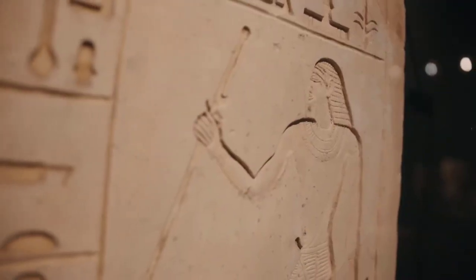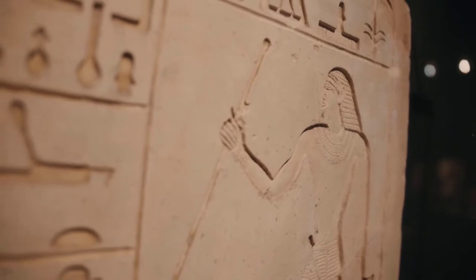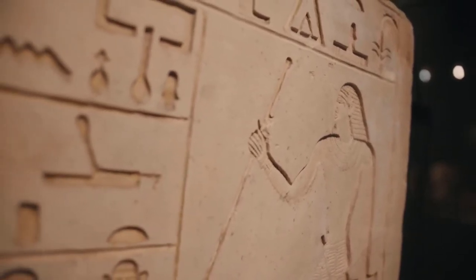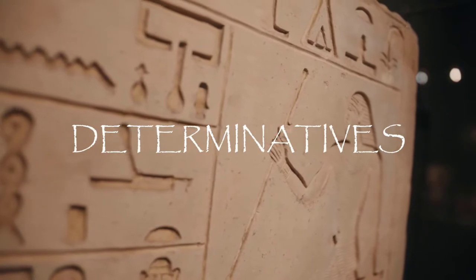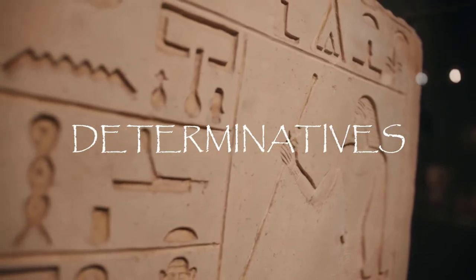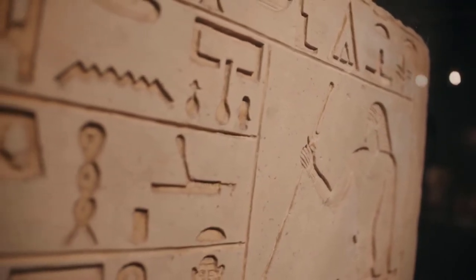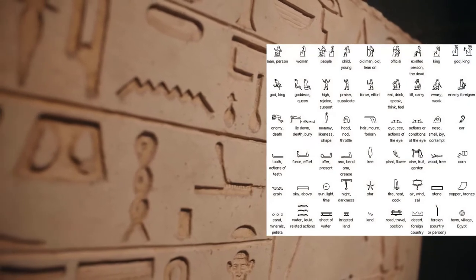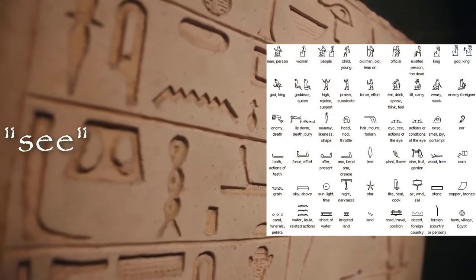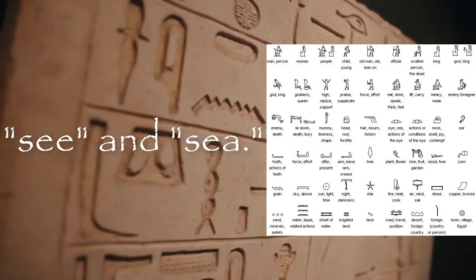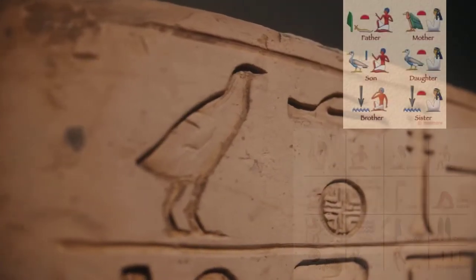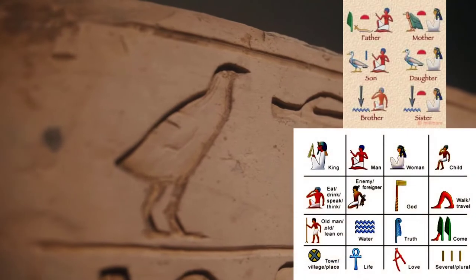Other symbols helped with the overall concept of a word or idea. These symbols are called determinatives. In some cases, two words may sound the same but have different meanings — sort of like the words 'see' and 'sea.' They sound the same but have different meanings.